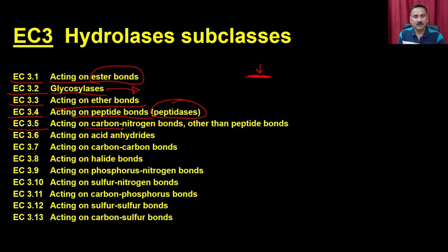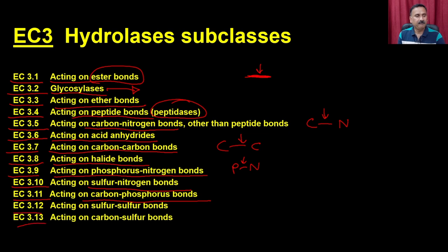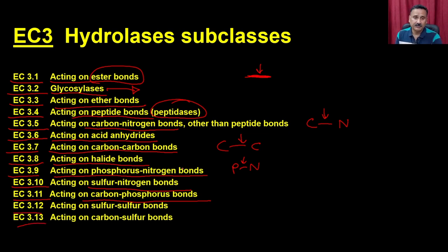Hydrolases are further classified into subclasses: EC3.1 acts on ester bonds; EC3.2 (glycolases) acts on glycosidic bonds; EC3.3 acts on ether bonds; EC3.4 acts on peptide bonds (peptidases); EC3.5 acts on carbon-nitrogen bonds; EC3.6 acts on acid anhydrides; EC3.7 acts on carbon-carbon bonds; EC3.8 acts on halide bonds; EC3.9 acts on phosphorus-nitrogen bonds; EC3.10 acts on sulfur-nitrogen bonds; EC3.11 acts on carbon-phosphorus bonds.